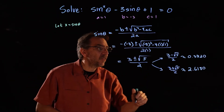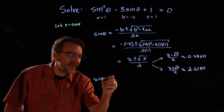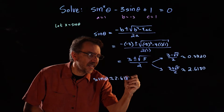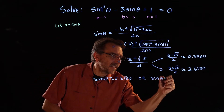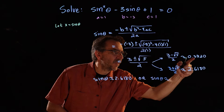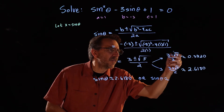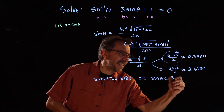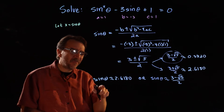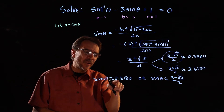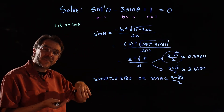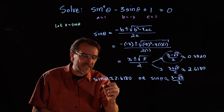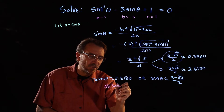At this point, sine theta could equal either of those two numbers. So sine theta is approximately 2.6180, or sine theta is approximately 0.3820. Now, sine theta equals approximately 2.61 is impossible — sine oscillates between negative 1 and 1, so there's no way it could be 2.6. You can do sine inverse of 2.6 on your calculator and see there's no solution there.